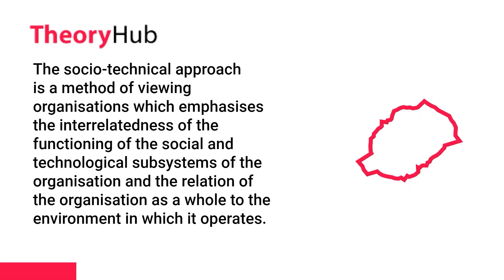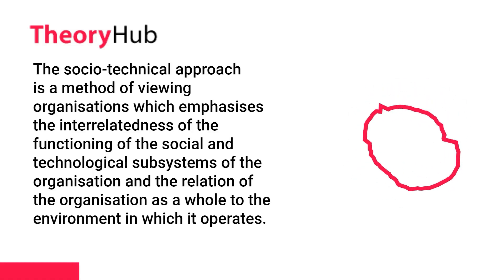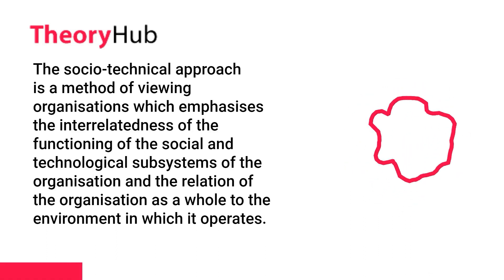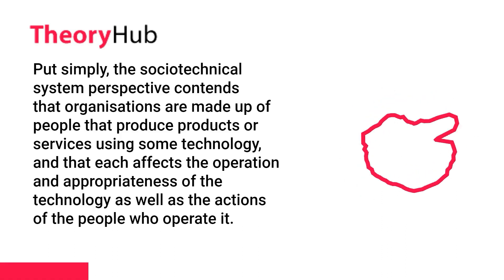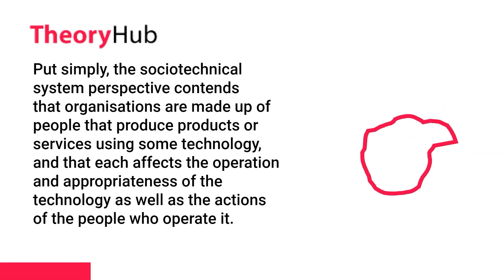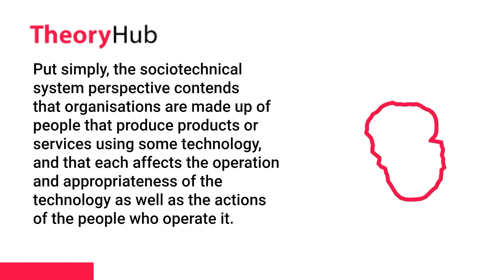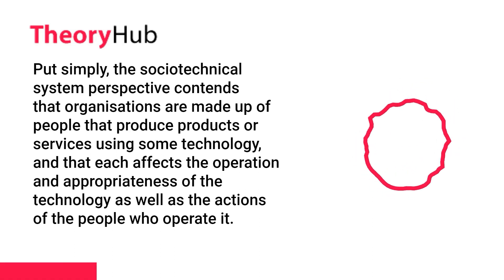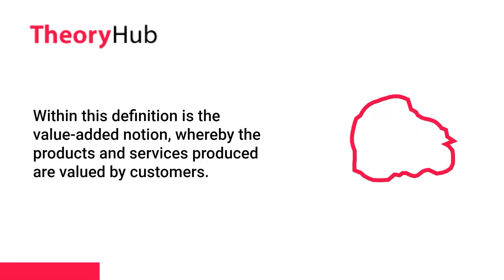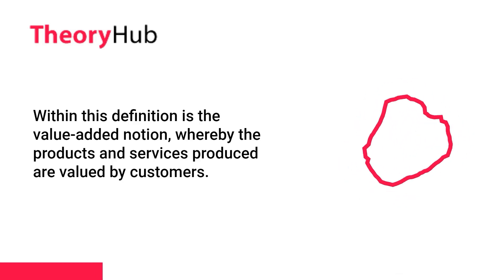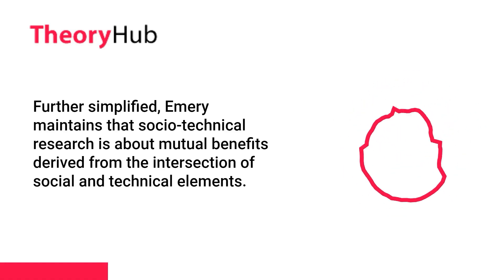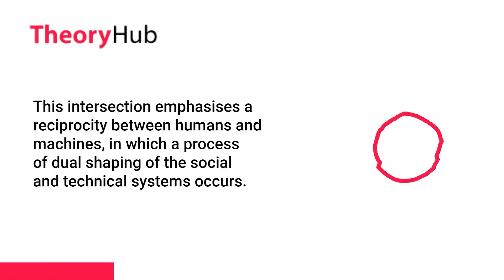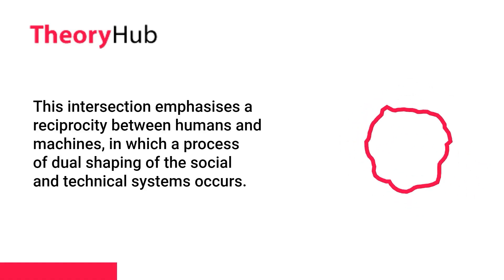The socio-technical approach is a method of viewing organizations which emphasizes the interrelatedness of the functioning of the social and technological subsystems of the organization, and the relation of the organization as a whole to the environment in which it operates. The socio-technical system perspective contends that organizations are made up of people that produce products or services using some technology, and that each affects the operation and appropriateness of the technology as well as the actions of the people who operate it. Emery maintains that socio-technical research is about mutual benefits derived from the intersection of social and technical elements, emphasizing a reciprocity between humans and machines, in which a process of dual shaping of the social and technical systems occurs.